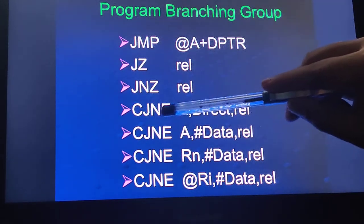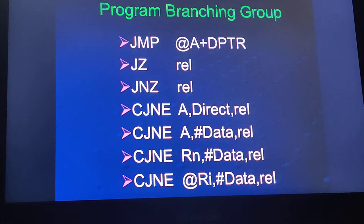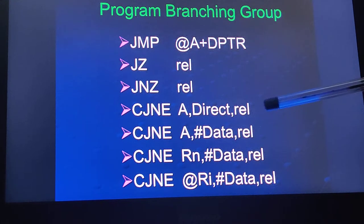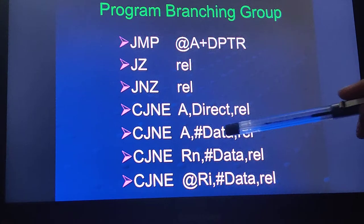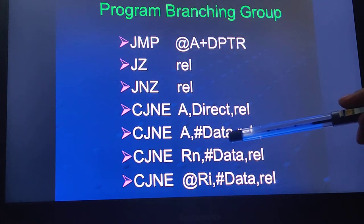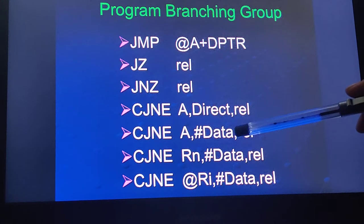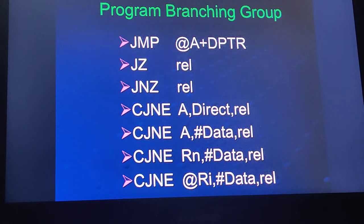CJNE — compare and jump if not equal. Two numbers are compared, and if they are not equal, the program transfers to the address location specified in the instruction. There is also CJNE where accumulator contents are directly compared with an immediate number specified in the instruction — if not equal, it goes to the relative address. You can also use registers R0 to R7 for the comparison.